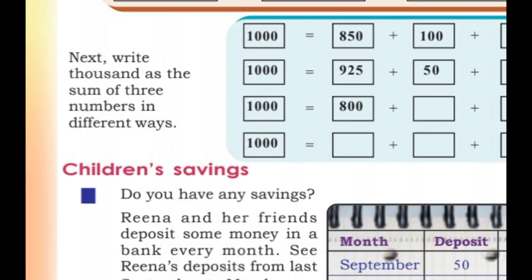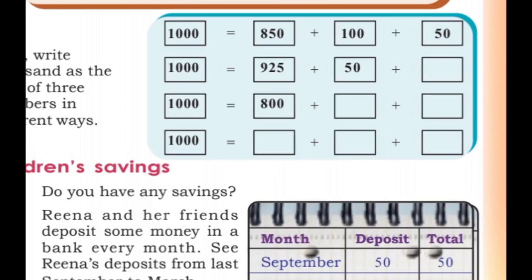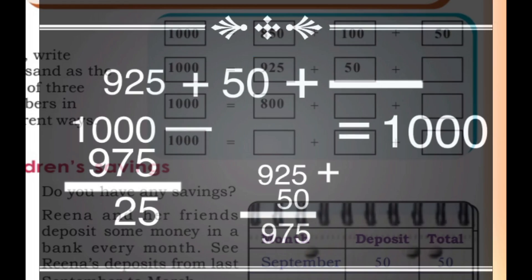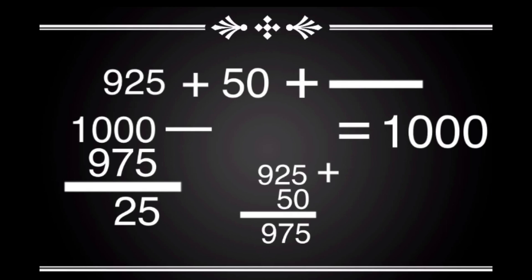Write 1,000 as the sum of three numbers in different ways. If we add three numbers in different ways, we fill it in: 850 plus 100 plus 50 equals 1,000. Next, in this picture: 925 plus 50 plus blank equals 1,000.